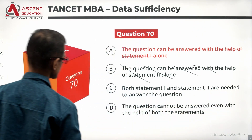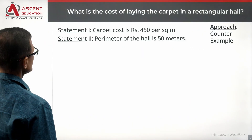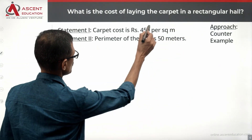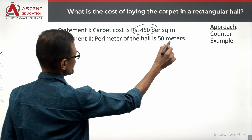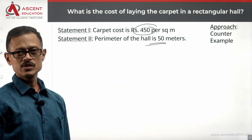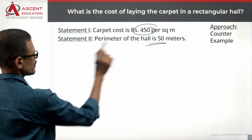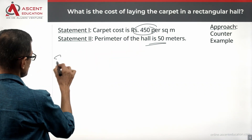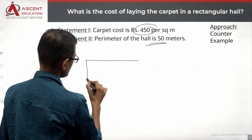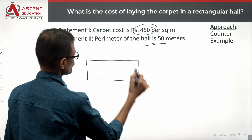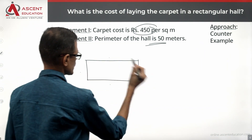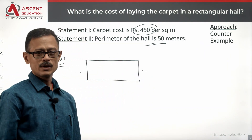Let's combine both statements and see if they are sufficient together. The approach I'll take is a counter-example. The cost per square meter is known. All we need to figure out is whether we can determine the area uniquely from the perimeter. It is a rectangle.